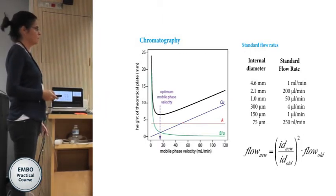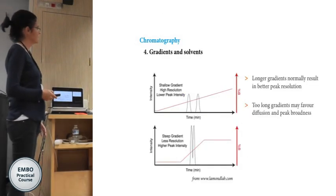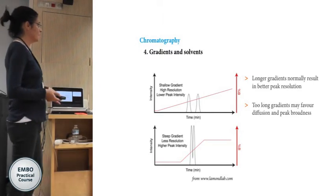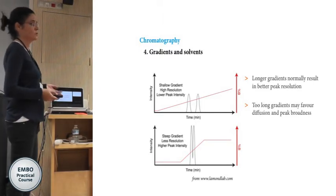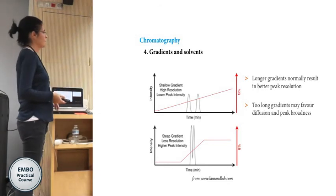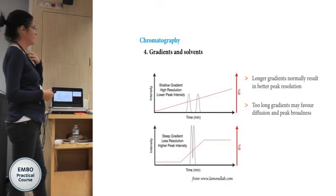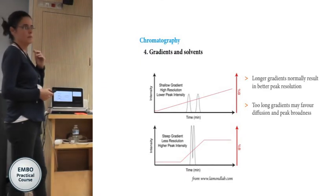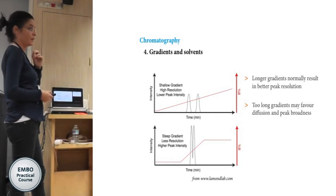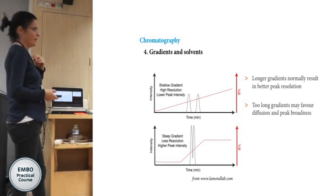The other thing you can adjust is the gradient and the solvents. Longer gradients normally result in better peak resolution, but too long a gradient may favor longitudinal diffusion and cause peak broadening. So we cannot use an infinitely long gradient because we will also lose resolution on that end.